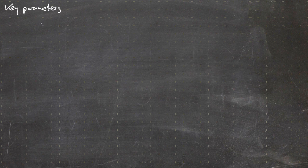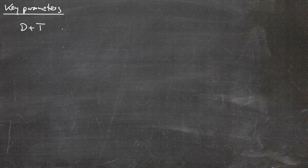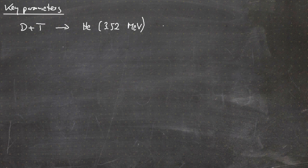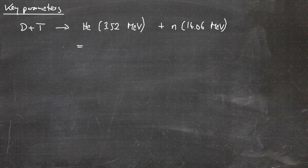From the last video you might remember that the DT fusion reaction was the most attractive one to be pursued on Earth, so that is definitely the candidate for our fusion reactors. DT fuses into a helium nucleus with 3.52 MeV and a neutron with 14.06 MeV. Only the energy of the alpha particle can be used for further heating, because only this is confined in the magnetic cage — so only 20% of the energy released in the fusion process is available for further heating.